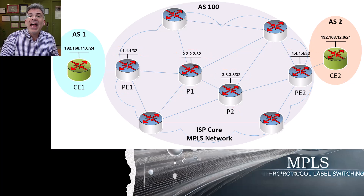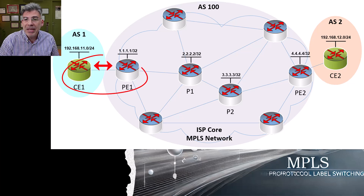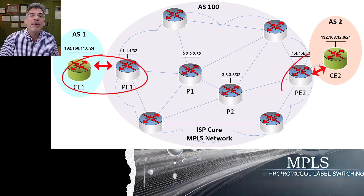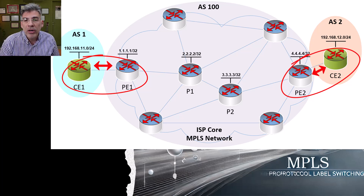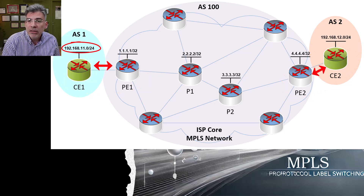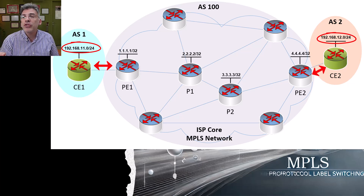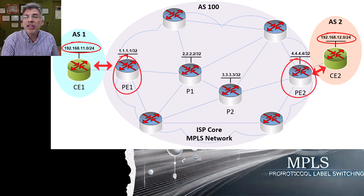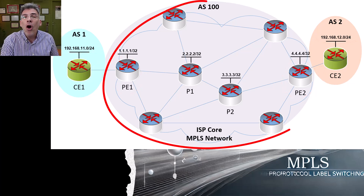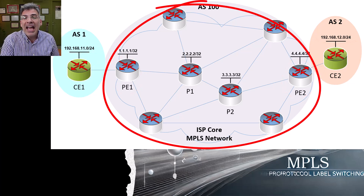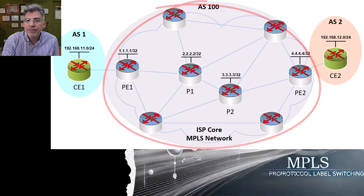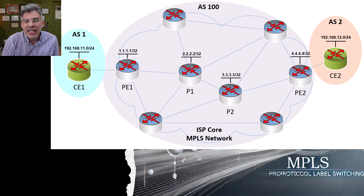We'll configure an eBGP peering between CE1 and PE1 and another eBGP peering between CE2 and PE2, so that customer networks will be advertised to the PE routers. Then we'll configure the OSPF underlay on all of the MPLS P and PE routers, followed by a full mesh of iBGP peerings between the PE routers. And finally, once all of that is done, we'll enable MPLS.